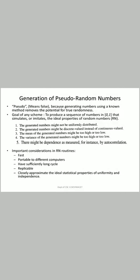Pseudo-random numbers — 'pseudo' means false — are generated numbers that are not truly random, because generating numbers using a known method removes the potential for true randomness. The goal of any generation scheme is to produce a sequence of numbers in (0,1) that simulates the ideal properties of uniformity and independence. There are five types of errors that can occur: generated numbers might not be uniformly distributed; they might be discrete-valued instead of continuous; the mean might be too high or too low; the variance might be too high or too low; or there might be dependency, as measured by autocorrelation.